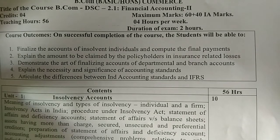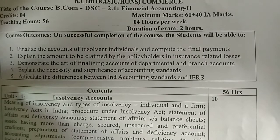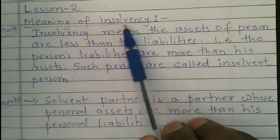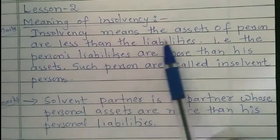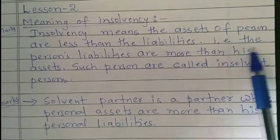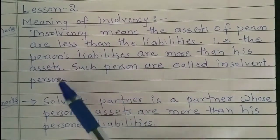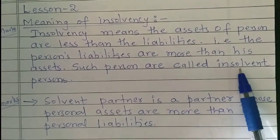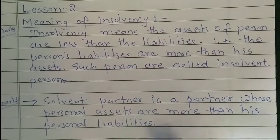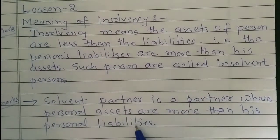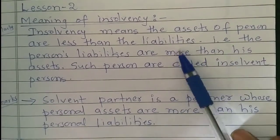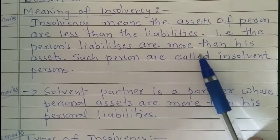Today let us know the types of insolvency and insolvency laws in India. Meaning of insolvency: insolvency means the assets of a person are less than the liabilities, that is the person's liabilities are more than his assets — such a person is called an insolvent person. A solvent partner is a partner whose personal assets are more than his personal liabilities. This is the meaning of insolvency that we have learned in the previous class.